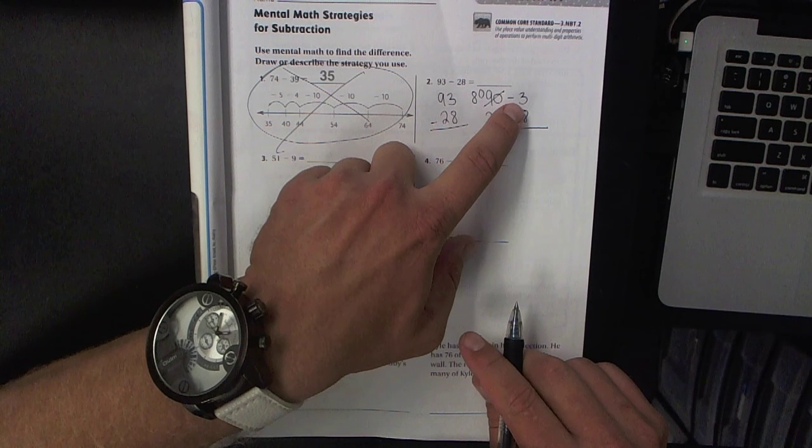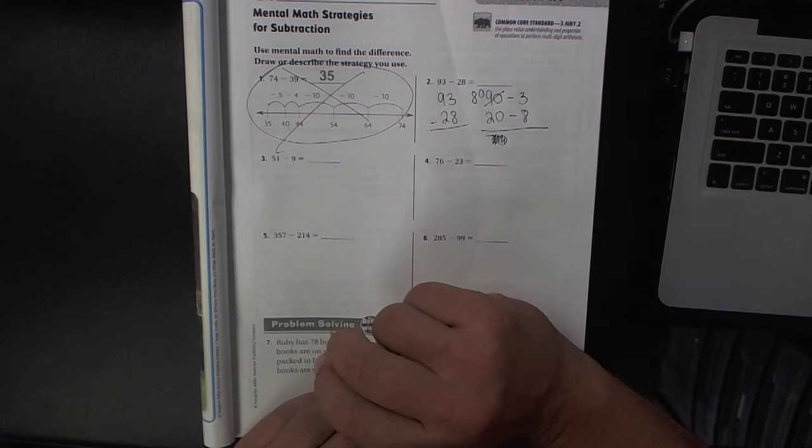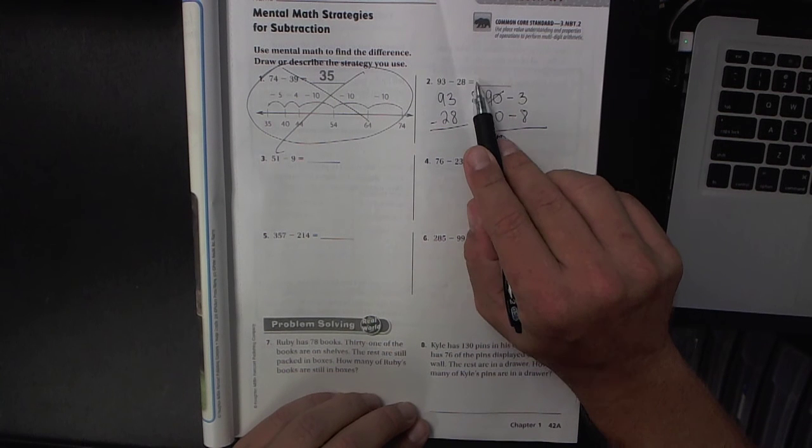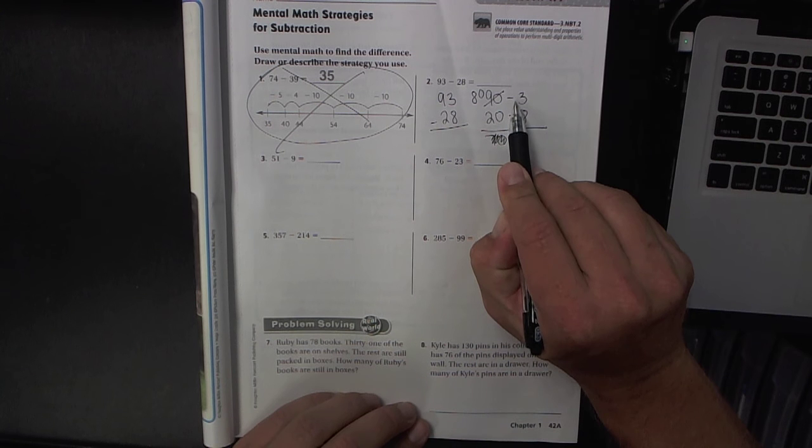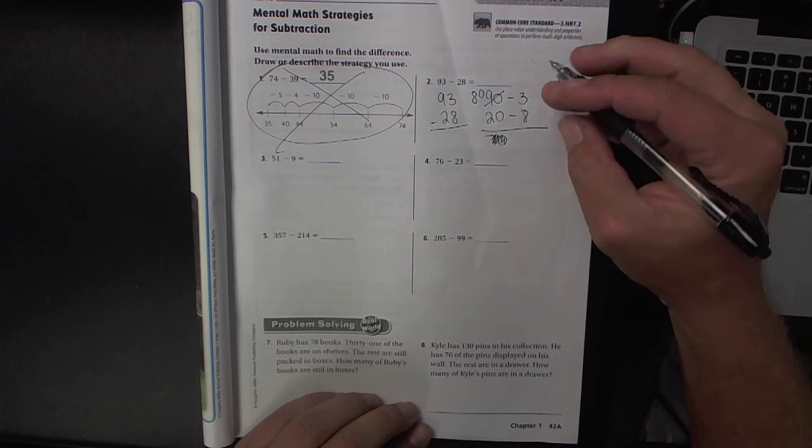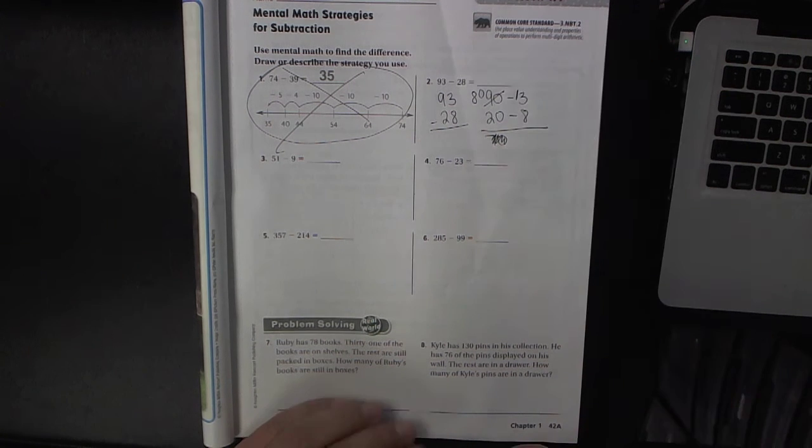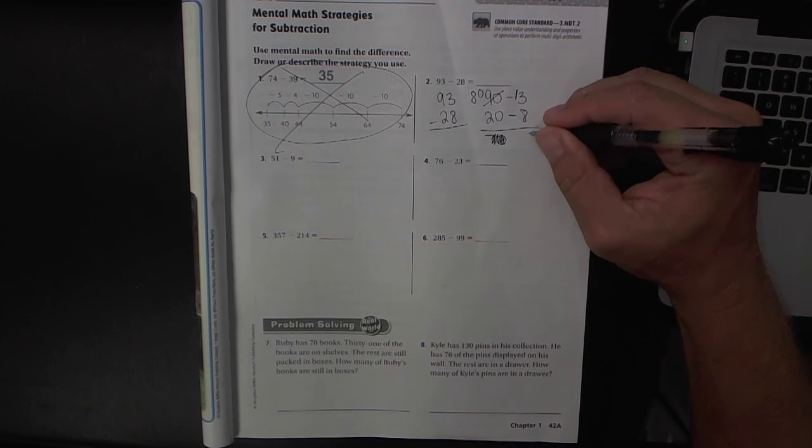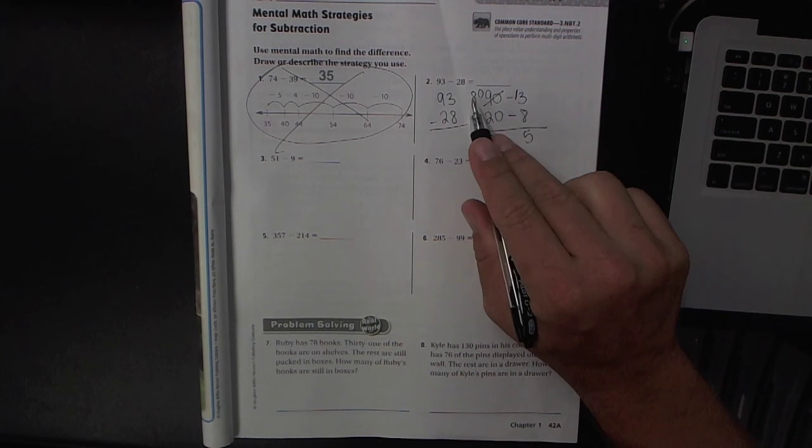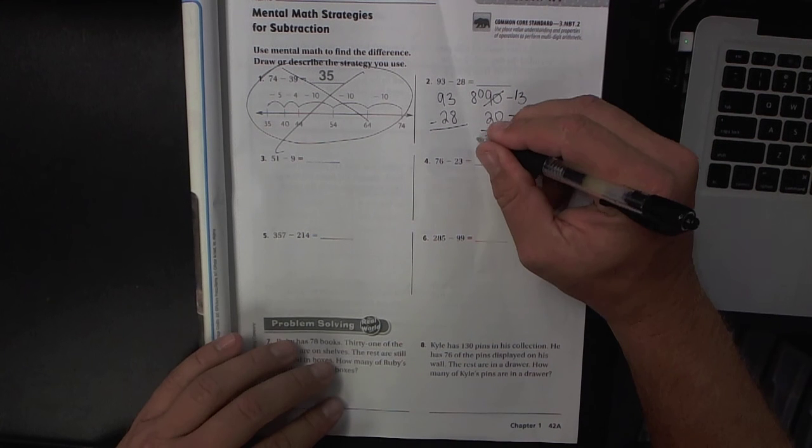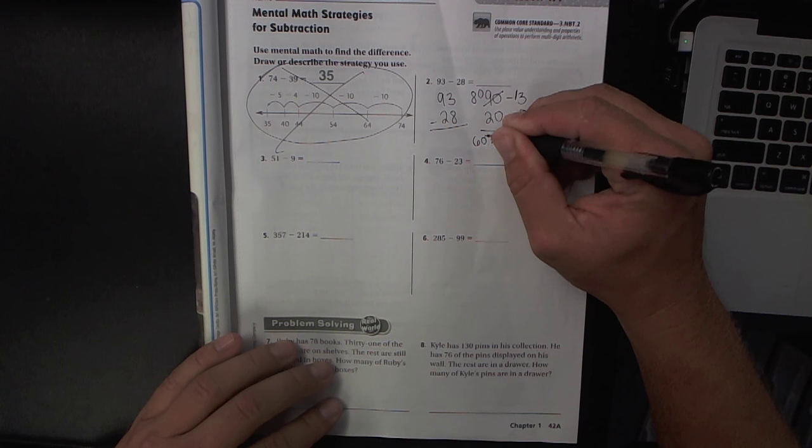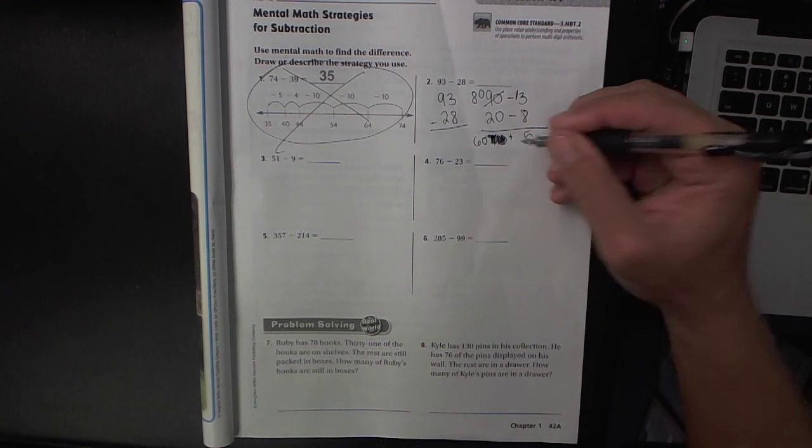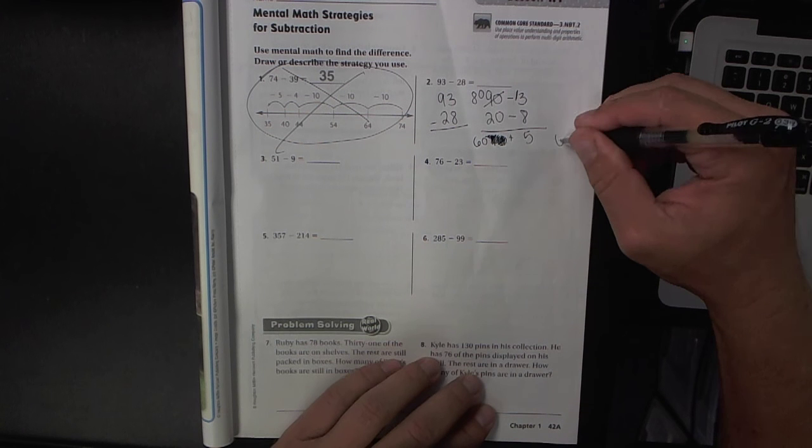So I've taken away 10 and I am going to put that 10 with the 3. So 3 plus 10, because I'm taking 10 away here and I'm adding it to the 3, 3 plus 10 is 13. Now I can subtract 13 minus 8 is 5, and 80 minus 20 is 60. So we have 60 plus 5, the answer is 65.